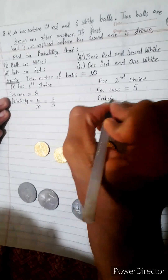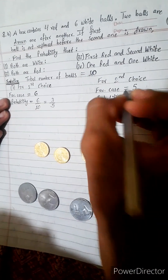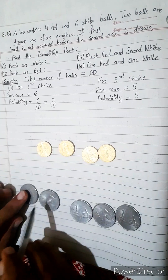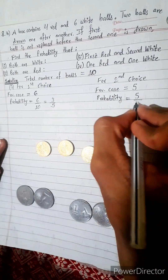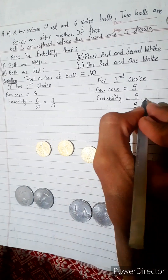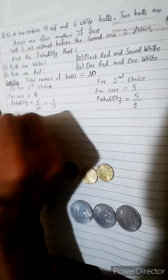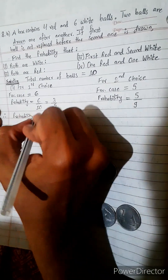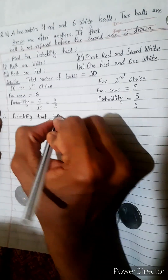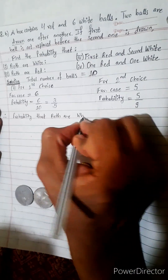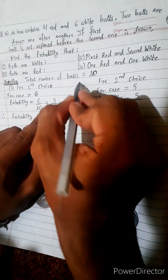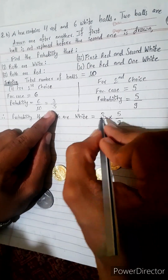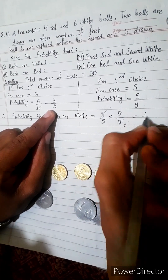And for the second draw, the probability will be five by nine. Why nine? Because one ball was already taken out, so only nine remain. Therefore, the final probability that both are white is three by five multiplied by five by nine, which equals one by three.